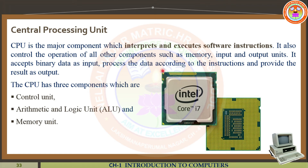The data will be processed according to the instructions. As per the instruction, it will perform and process the data. Finally, it will provide the result as output. This is the main working principle of CPU — central processing unit.